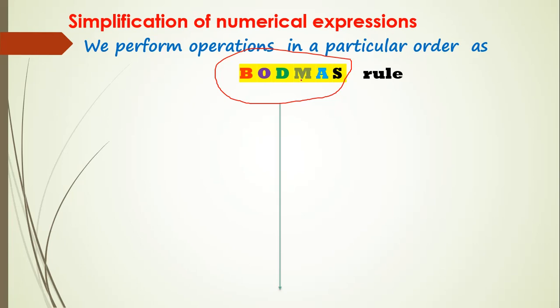M stands for multiplication, A for addition, and last, S for subtraction. We need to perform the operations in this order. This rule will be called the BODMAS rule.